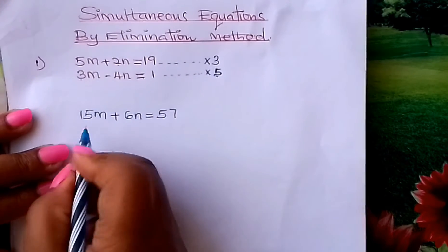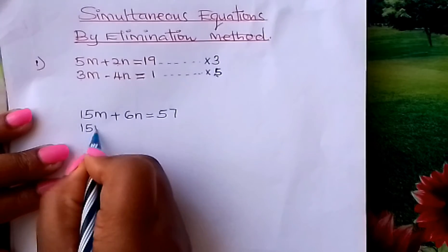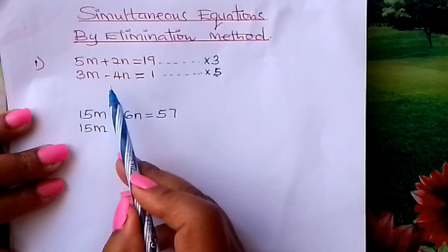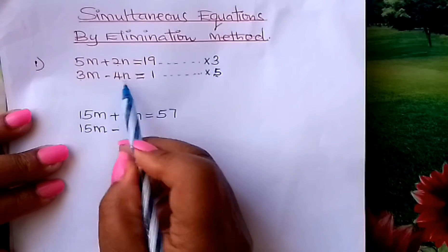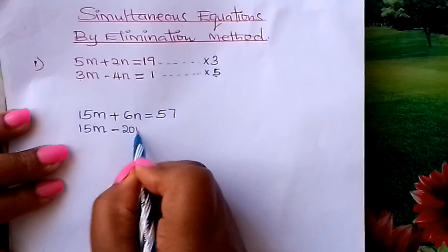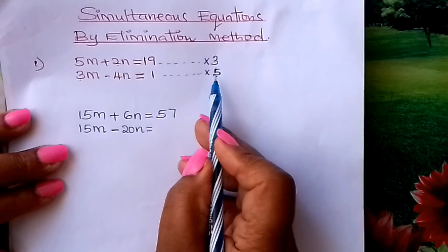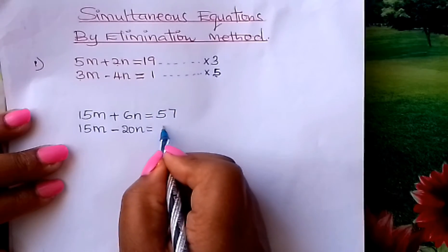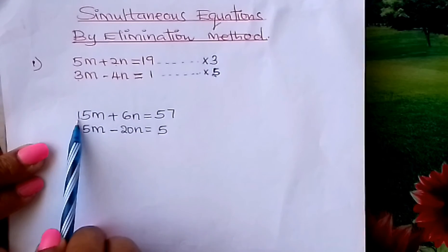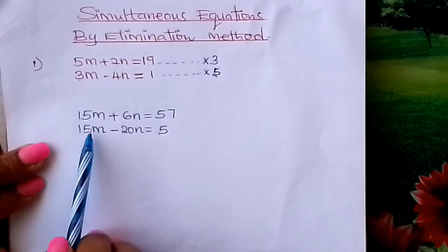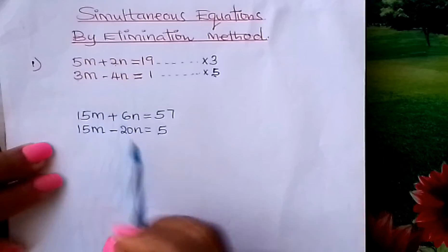5 times 3M gives you 15M minus 5 multiplied by 4N is 20N which equals 5 times 1 which is 5. Look at this. You have 15M here, 15M. The terms now are the same.